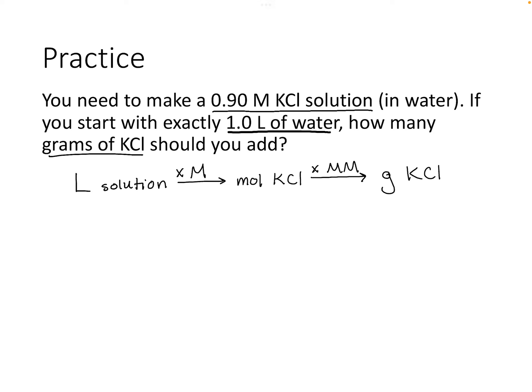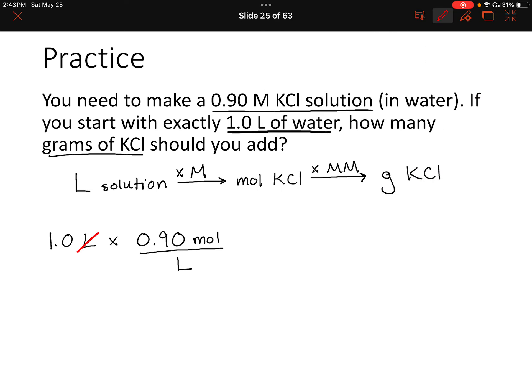Starting with 1 liter of solution and multiplying by the concentration 0.9 moles per liter — liters cancel — gives us 0.9 moles of potassium chloride. That makes sense: we're starting with exactly one liter and want a 0.9 moles per liter solution, so we need 0.9 moles of KCl.